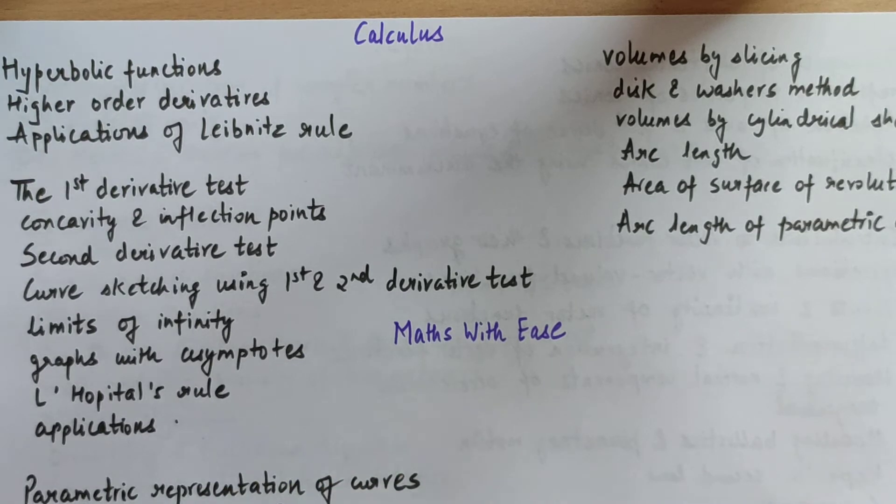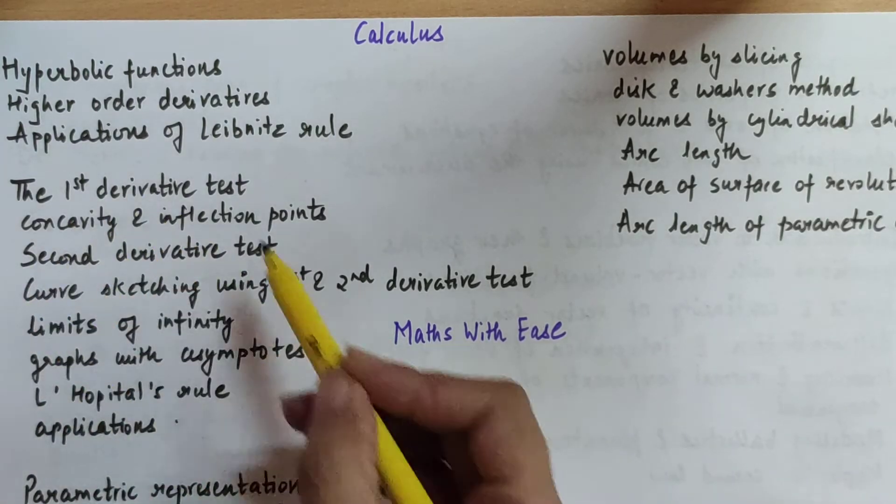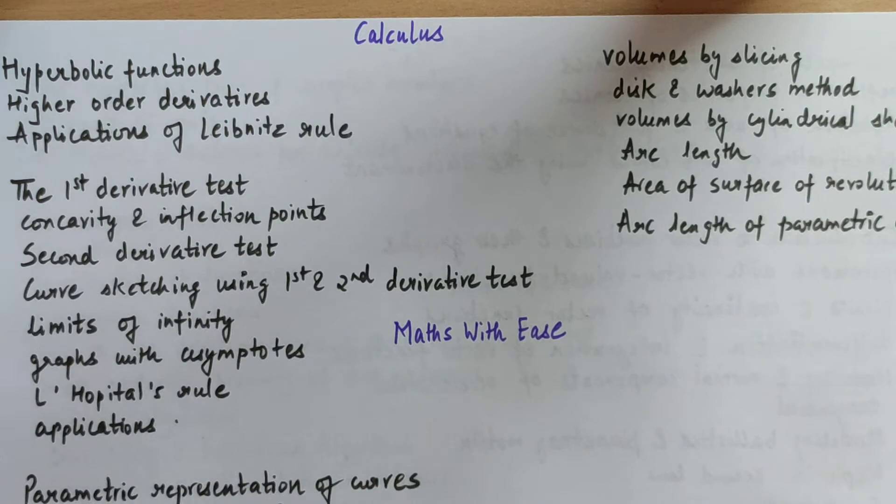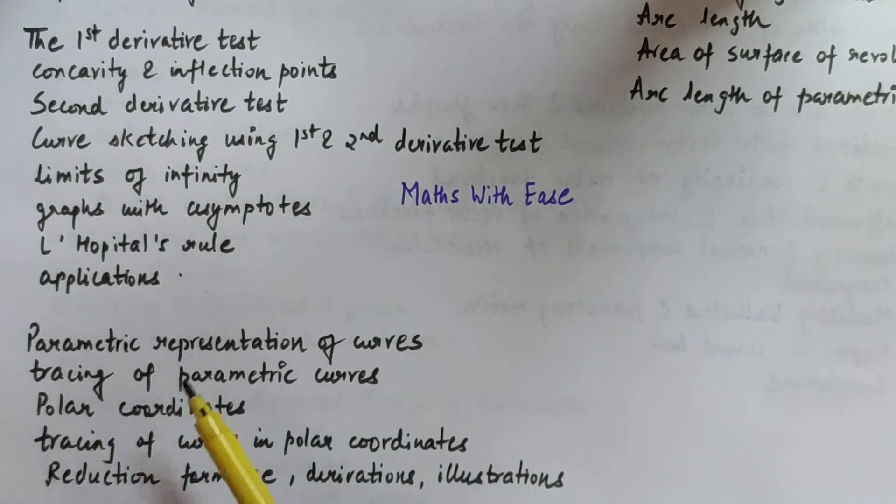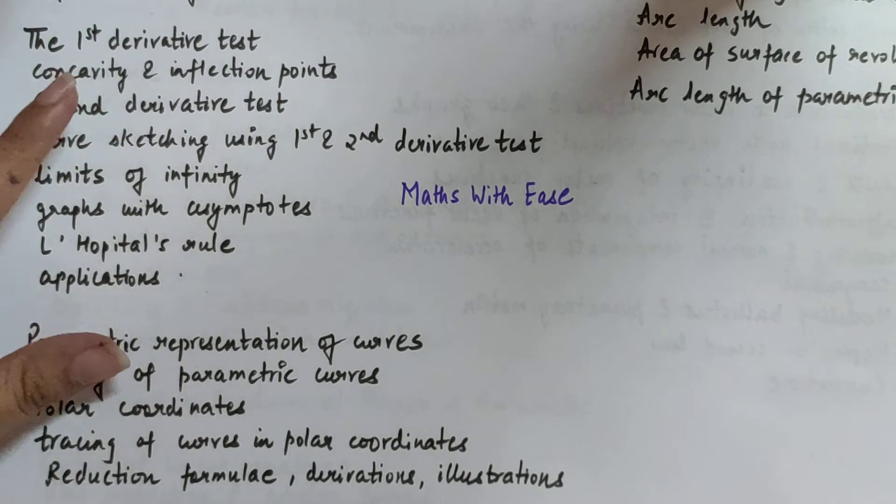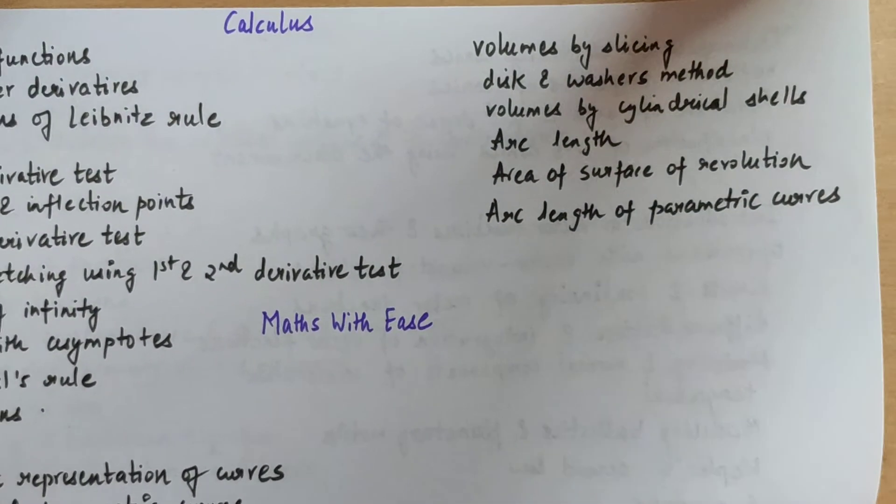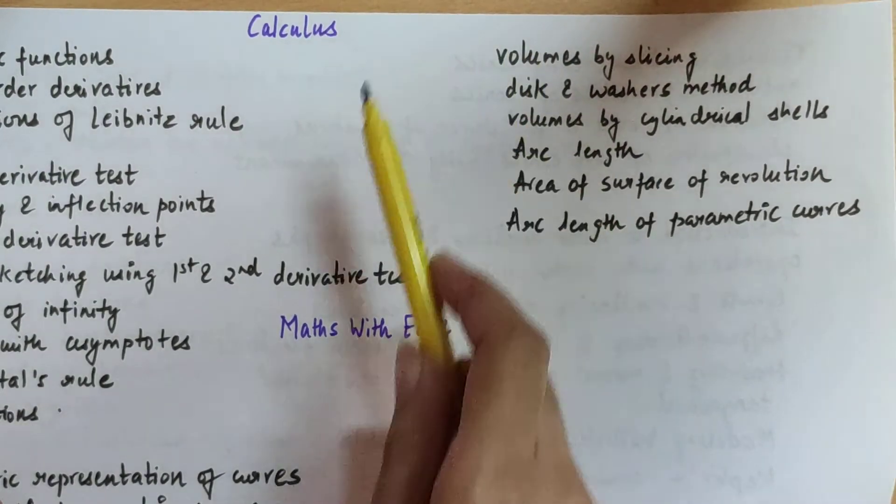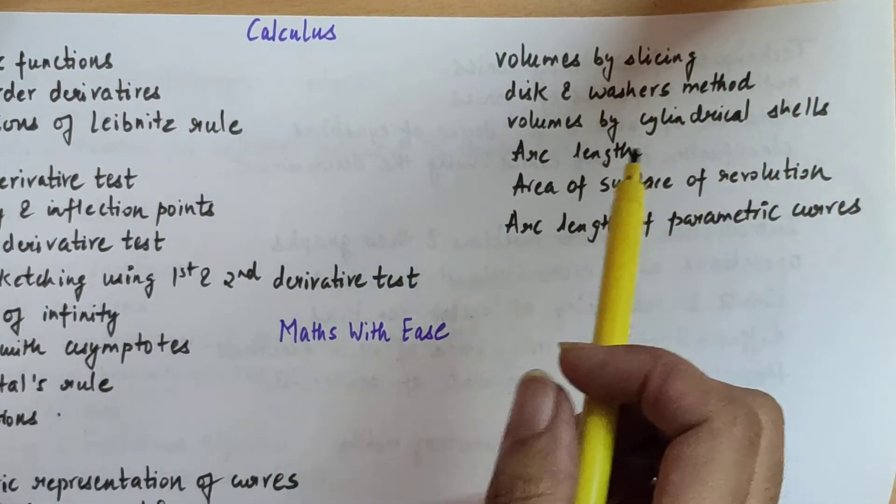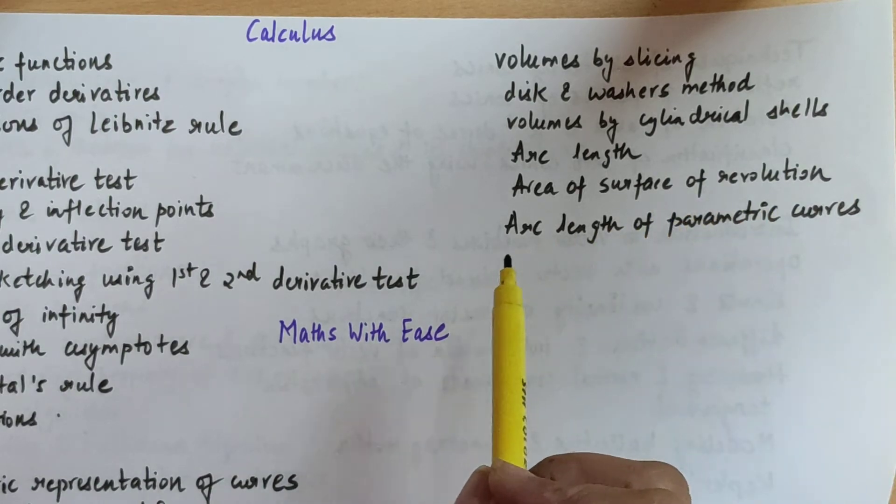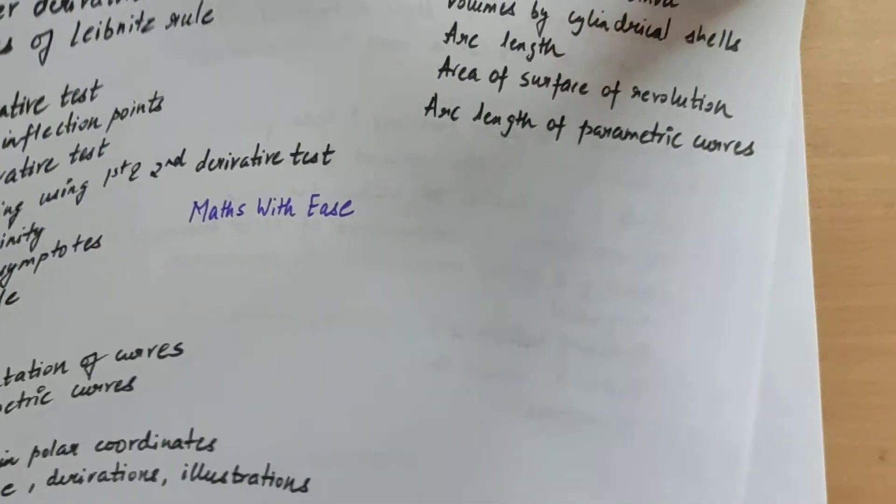I have talked about this in my previous videos. You can just start revising these topics to cover the syllabus. Your third part consists of topics like parametric representation of curves, tracing of parametric curves, polar coordinates, tracing of curves in polar coordinates, deduction formulae, derivations and illustrations. The fourth part consists of topics like volumes by slicing, disk and washers method, volumes by cylindrical shells, arc length, area of surface of revolution, arc length of parametric curves.